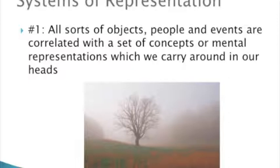Hall uses the example of language to illustrate this idea. He states that an actual physical word itself is not physically associated with the concept it describes. Instead, culture has attached meanings to certain combinations of letters. For example, when we hear the word 'tree,' we think of a tall object with a large brown trunk and green leaves growing from branches at the top. However, a person who speaks only French would not have the same association with the word 'tree.' Instead, they would see a similar picture when faced with the word 'arbre.'